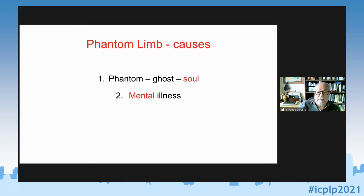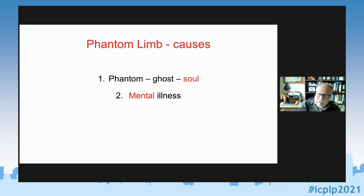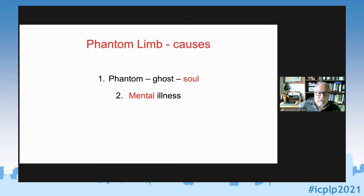The second historical explanation was that it was a mental illness. This is typical of medicine — whenever we don't know something, we say the person must be mad. Interestingly, this kind of explanation stayed in medicine for a long time, all the way down to World War II reports. Soldiers who had lost limbs during the war refused for a long time to acknowledge their symptoms so they wouldn't be labeled as crazy and sent to an asylum.